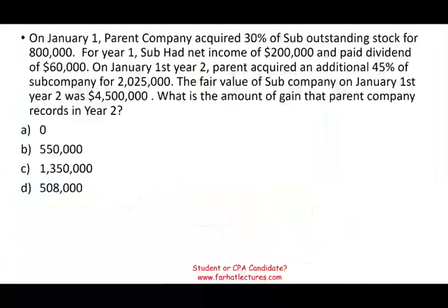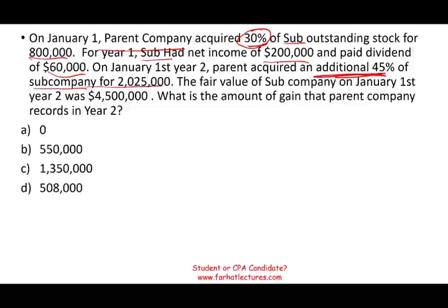Let's take a look at this exercise to see how we will approach something like this on exam day. On January 1st, parent company acquired 30% of subcompany outstanding stock for $800,000. In year one, the subsidiary had income of $200,000 and paid dividends of $60,000. So 30% means we're using the equity method. On January 1st of year two, the parent company acquired an additional 45% of the subcompany for $2,025,000.